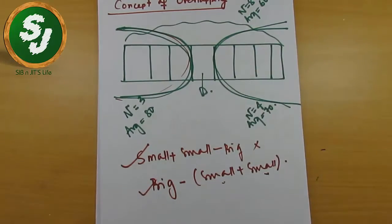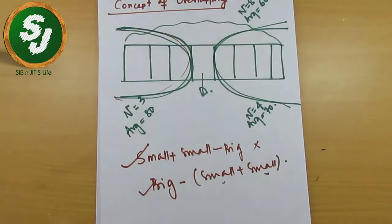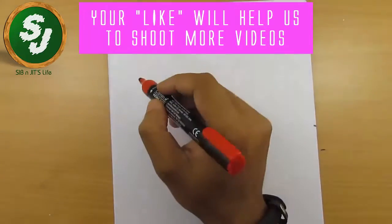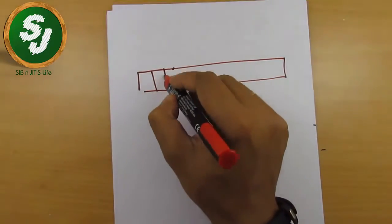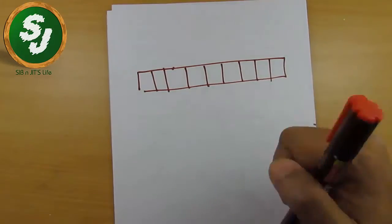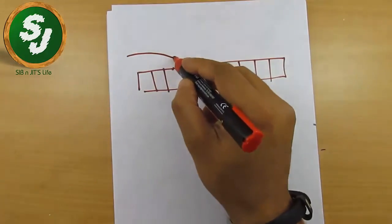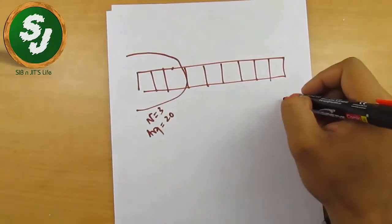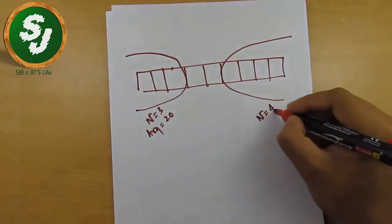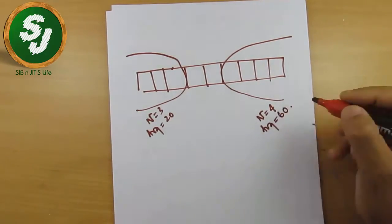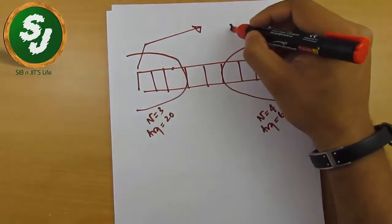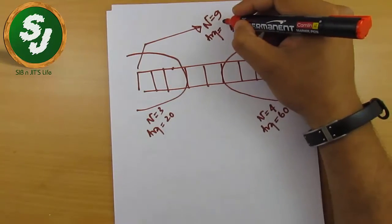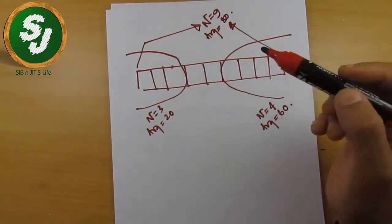Now consider another situation. There are nine numbers: 1 through 9. The first three numbers have n = 3 and average = 20. The last four numbers have n = 4 and average = 60. The overall average is given: n = 9 and average = 80.